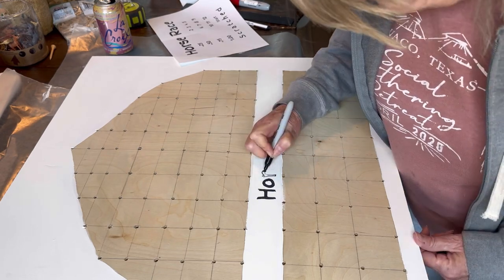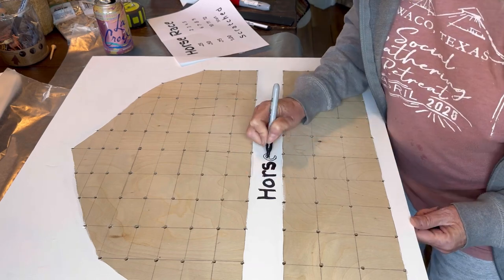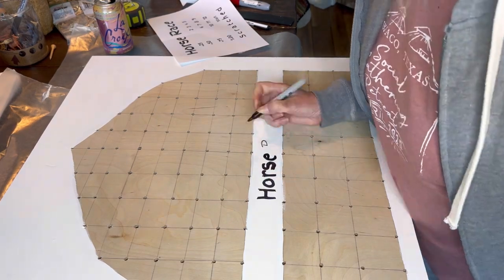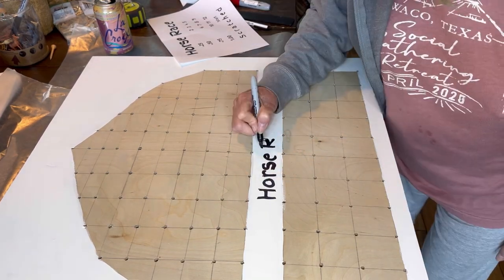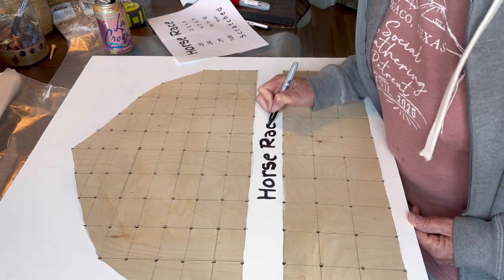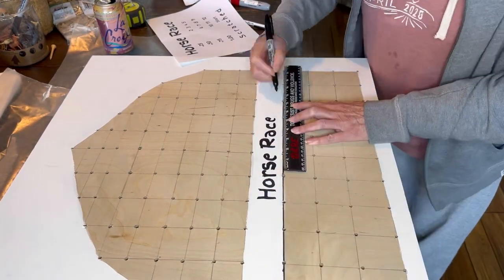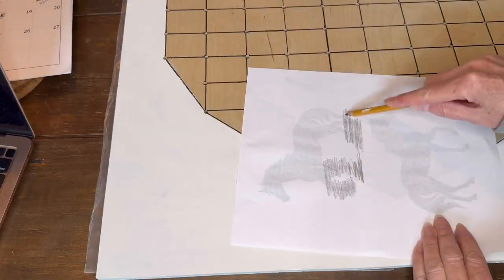Or if you have a Silhouette or a Cricut machine, you could cut this out of vinyl and place it on here or actually do a stencil so that you could paint it in or stencil it on. But I just prefer to do this the easy way. I'll say you want to highlight all of the lines that you drew with the pencil.